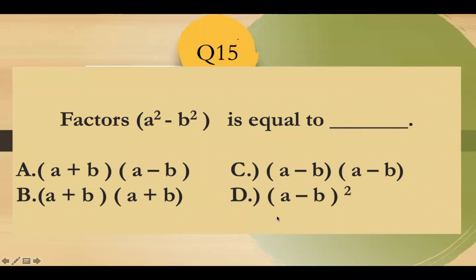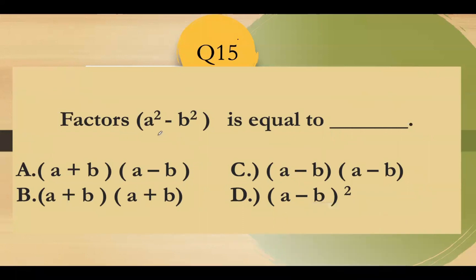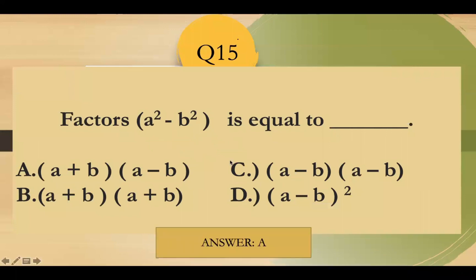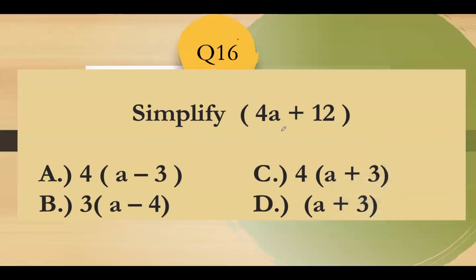Question number 15: a squared minus b squared equals — using the difference of squares pattern, the factors are (a plus b)(a minus b). Letter A. Question number 16: simplify — the common factor is 4. Dividing 4a by 4 gives a, and 12 by 4 gives 3, so the simplified form is 4(a plus 3). Answer: letter C.